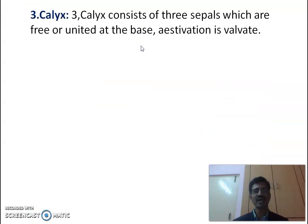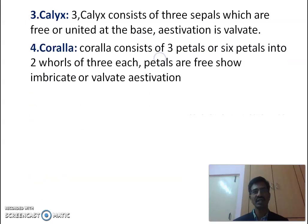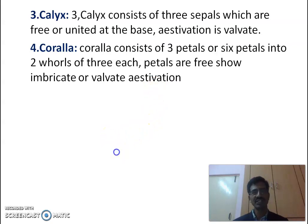In the calyx, three sepals are present which are polysepalous, meaning sepals are free; aestivation is valvate. In the corolla, usually three petals are observed as in the case of Artabotrys, and petals are free — that is why it is included in the subclass Polypetalae — and it shows imbricate or valvate aestivation.